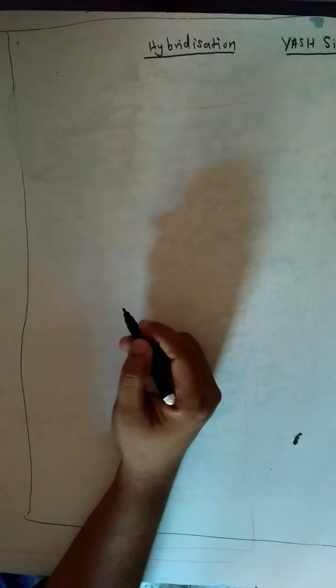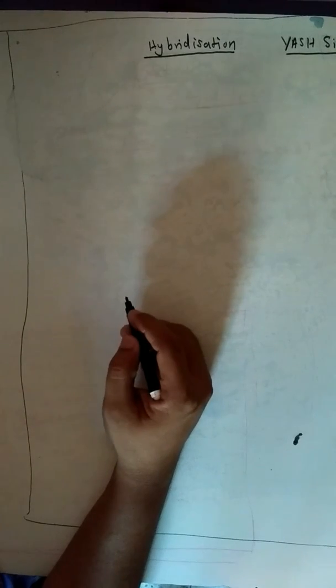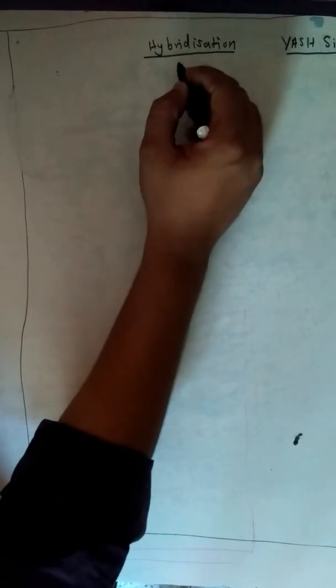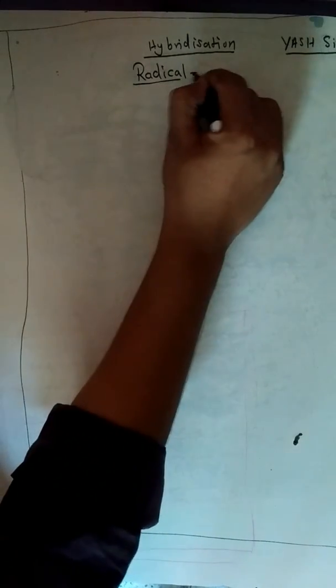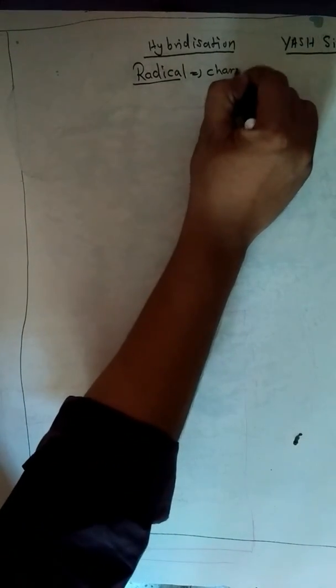Many of my students have told me to tell us the simplest formula to find out the hybridization. So I will be telling you the formula for hybridization of radicals. Radicals means charged species.